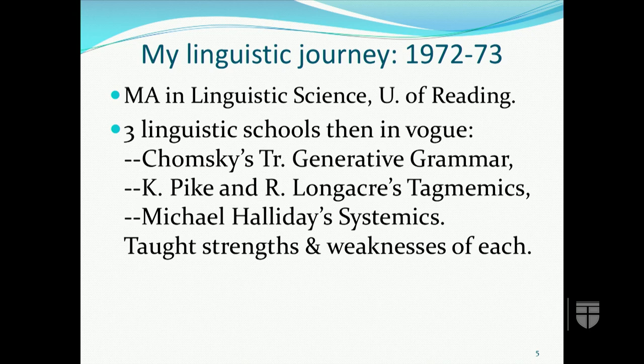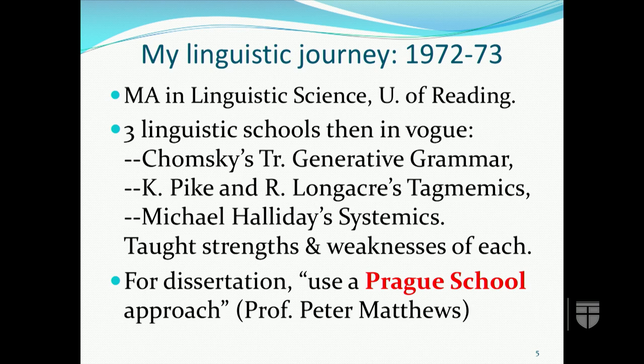We returned to the UK in 1972 for me to study for an MA in Linguistic Science at the University of Reading. One course introduced us to three linguistic schools then in vogue: Chomsky's Transformational Generative Grammar, Pike and Longacre's Tagmemics, and Halliday's Systemics, with the lecturer pointing out the strengths and weaknesses of each. However, as I started working on my dissertation on discourse features of the Inga language, my supervisor Peter Matthews took one look at my corpus and said, 'You need to use a Prague school approach.'